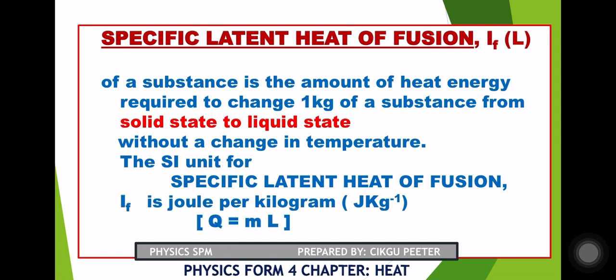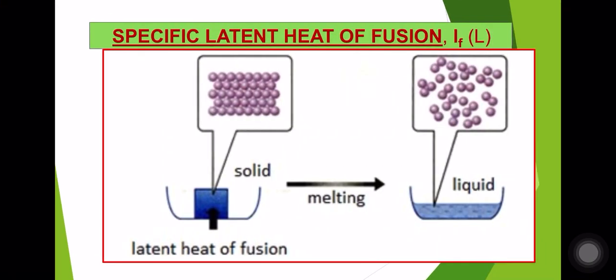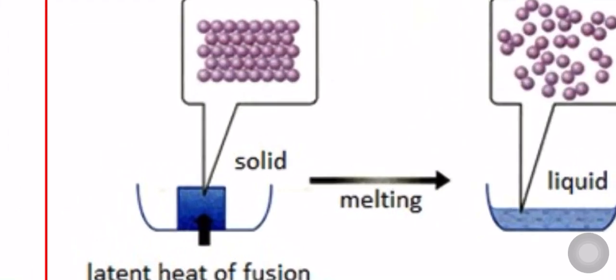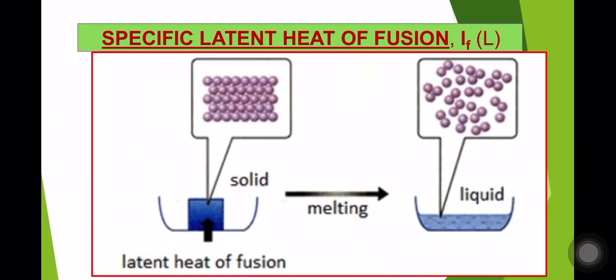The temperature remains constant during this process. The formula is Q = mL, where Q refers to the quantity of heat energy needed, m is the mass of the object, and L is the value of specific latent heat of fusion, which is 336,000 joules per kg. From the diagram, the energy required by one kg mass of ice is 336,000 joules — this value will be given in your questions.